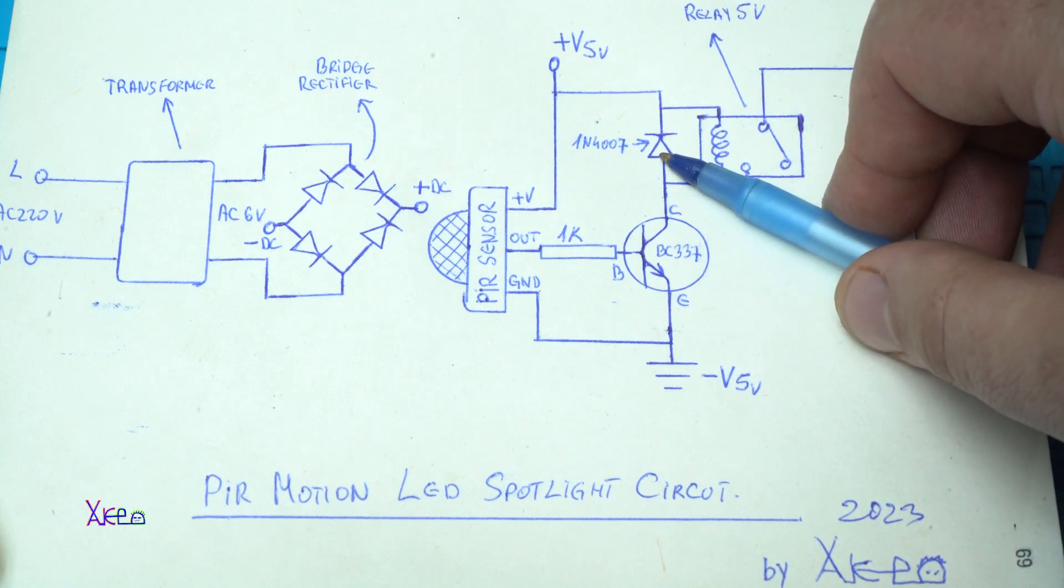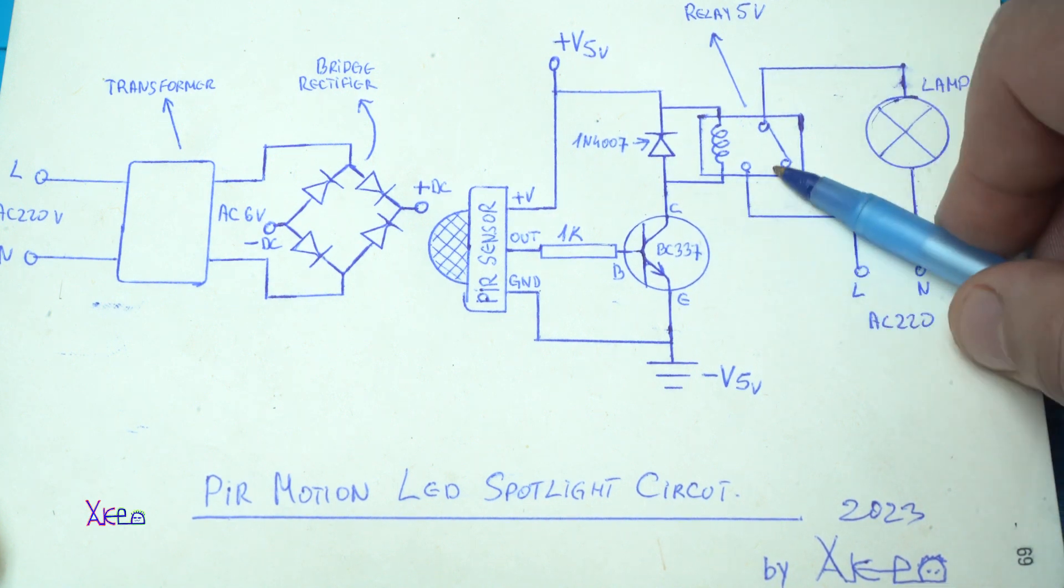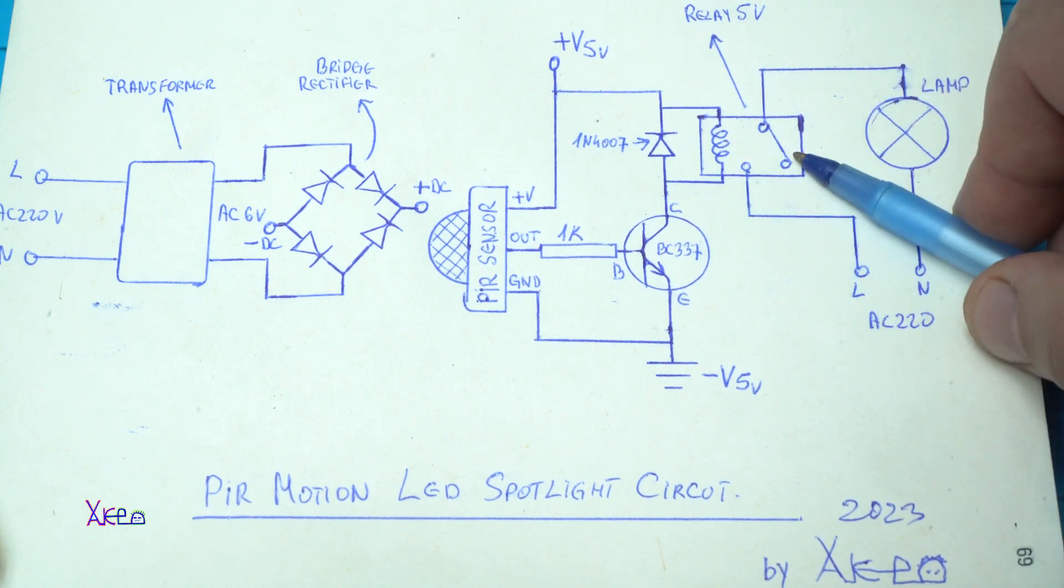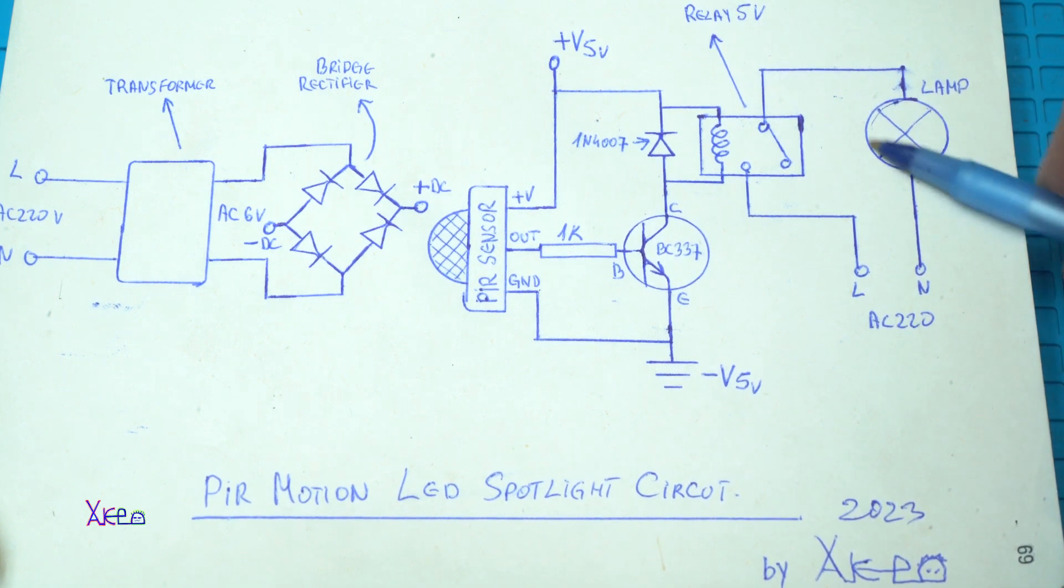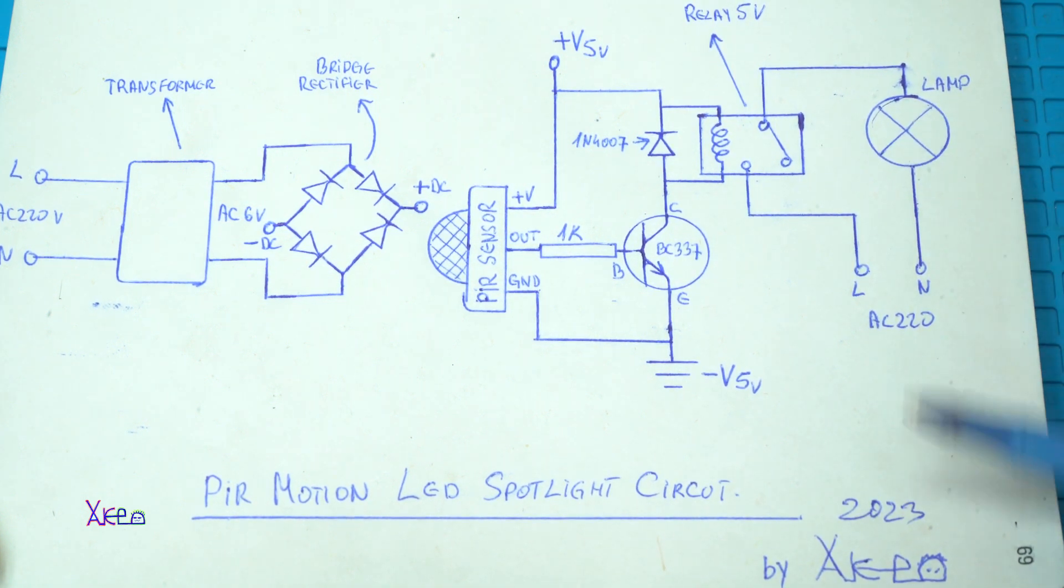One diode 1N4007, one 5V relay that can handle 10A at 220V AC, and here we are going to attach the lamp.